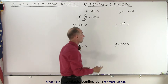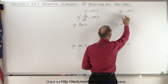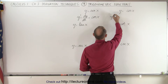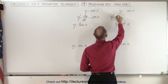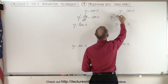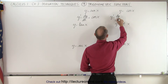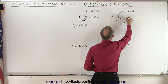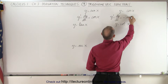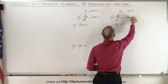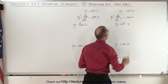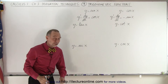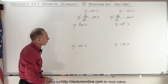It turns out that if we take the derivative of the cosine of x, y prime — which is equal to dy/dx — is equal to the negative sine of x. So those are the two basic trigonometric functions and their derivatives.